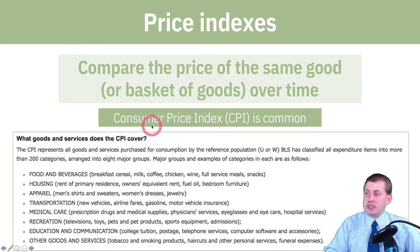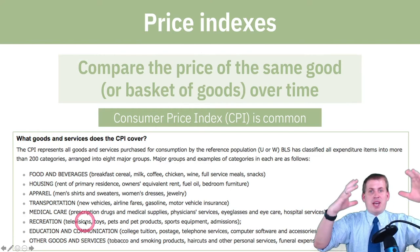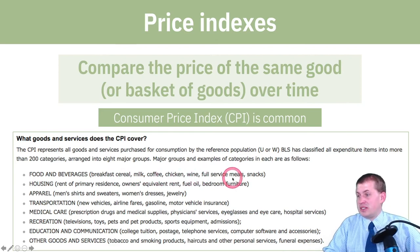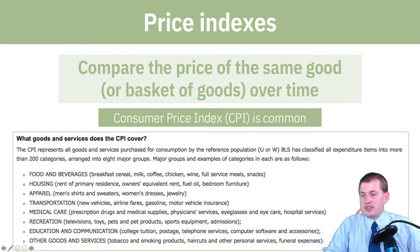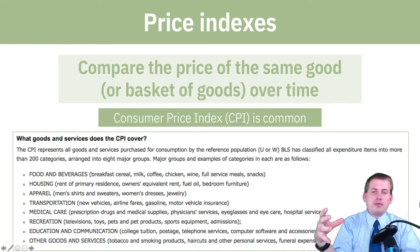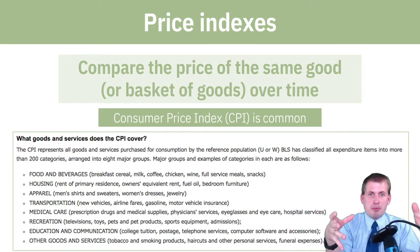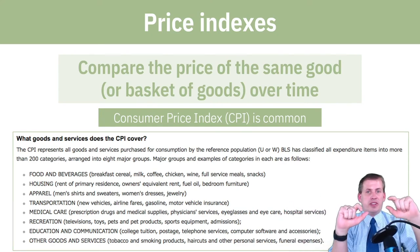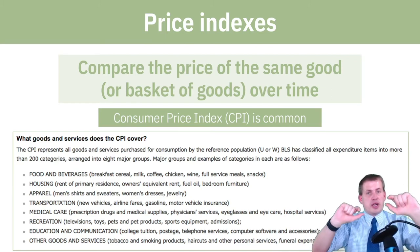In the United States we use the Consumer Price Index, or CPI, which includes a big basket of normal staple things people buy — bread, breakfast cereal, milk, coffee, chicken, wine, meals, snacks, jewelry, gas, sports equipment, pet products, toys, college tuition, postage, telephone services, funeral expenses, and more. You figure out how much that whole basket would have cost in 1950, write it down, see how much it cost in 1951, calculate the change, and that gives you the price index.